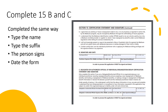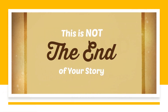Go on to page 24 to complete 15b and, if necessary, 15c. The two sections are completed the same way: enter the person's name followed by their suffix, have the person sign in the box below their first name, then have them enter the date they signed the form.